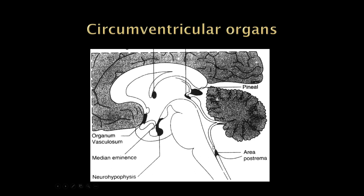At the lower part of the fourth ventricle, there's an area called the area postrema, also known as the vomiting center. Because this lacks a blood-brain barrier, if you ingest something toxic or take certain medications — like chemotherapeutic medications, which tend to cause a lot of nausea and vomiting — they do that through stimulation of the area postrema. It doesn't have a blood-brain barrier, so patients will feel sick and throw up.